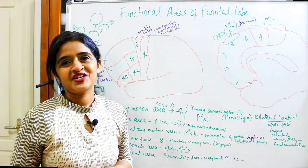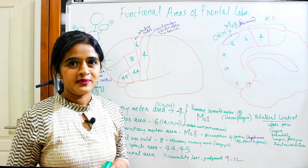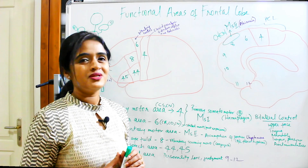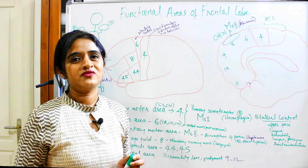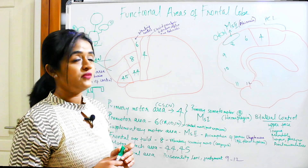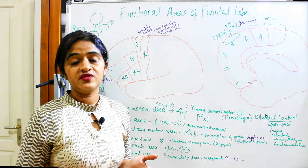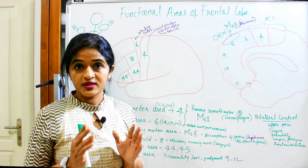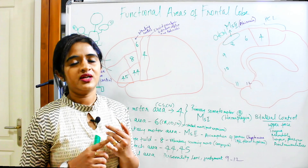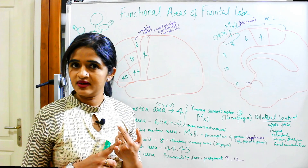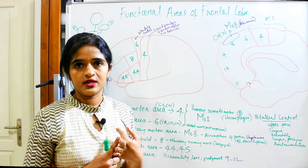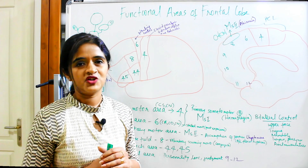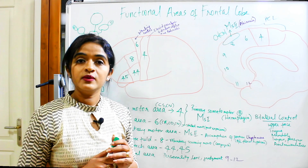Hello everyone, welcome back to my channel. Those who haven't subscribed yet, please subscribe so that I will feel motivated to do more sessions from neuroanatomy, embryology, as well as the rest of anatomy. We have already been discussing the functional areas of the cerebral hemisphere, so this session is a continuation of the same. Those who are seeing it for the first time, please make sure you have seen the previous sessions on the sulci, gyri, the superlateral surface and the medial surface of the cerebral hemisphere.